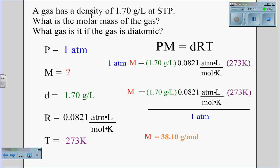In this problem, a gas has a density of 1.70 grams per liter at STP. What is the molar mass of the gas, and what gas is it if the gas is diatomic?